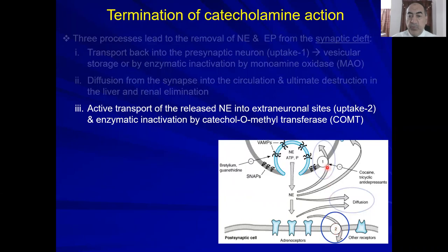The third pathway is to undergo active transport into the post-junctional cell. This is called reuptake-2. The first one is called reuptake-1; it's a facilitated transport that goes along with sodium transport. Reuptake-2 is active transport into the extraneuronal site — the post-junctional cell — and it can undergo enzymatic inactivation by catechol-O-methyltransferase, which we'll discuss shortly.